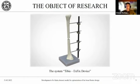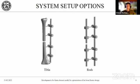System modeling was carried out in the SOLIDWORKS software package. Since our goal is to simplify calculations as much as possible in the first approximation, we considered two setups of the system: the tibia system and the rods system. The tibia system is a solid 3D model of the real bone–exfix device system using a bone model. The rods model is also a solid 3D model, but with the use of metal rods instead of bone, since creating a bone model is a quite time-consuming process.